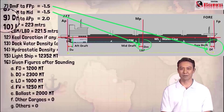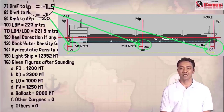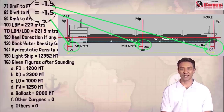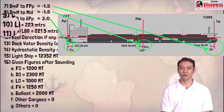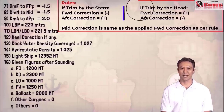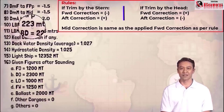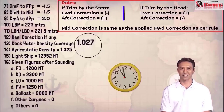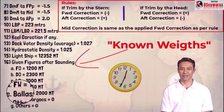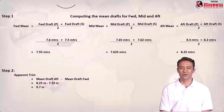Numbers 7, 8, and 9 are draft marks for forward, midship, and aft perpendiculars, which equal negative 1.5, negative 1.5, and positive 2.0 respectively. You'll find here the rules of thumb that must be followed. Number 10: LBP (length between perpendiculars) equals 223 meters. Number 11: length between marks, or length between drafts, equals 221.5 meters. After gathering all required data, we can now proceed with the computation.